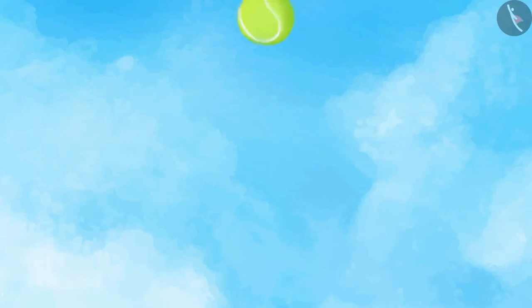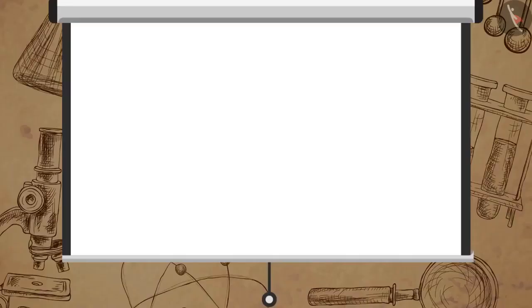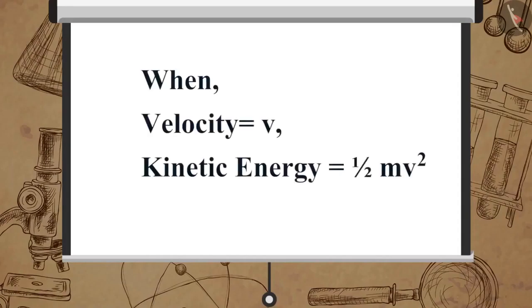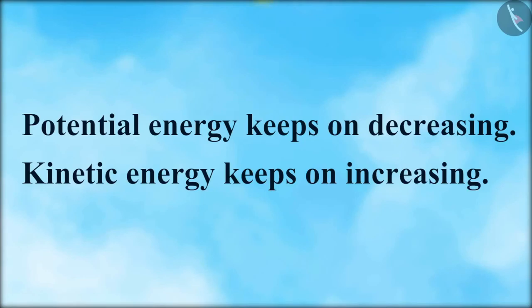As the ball begins to fall, the potential energy is converted into kinetic energy. If the velocity of the ball at a given instant is V, then its kinetic energy is ½mv².